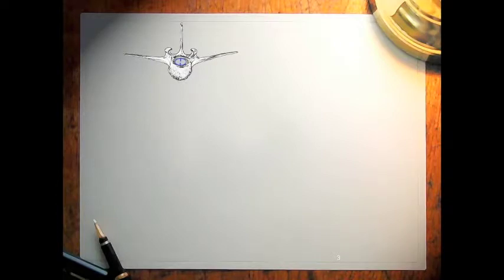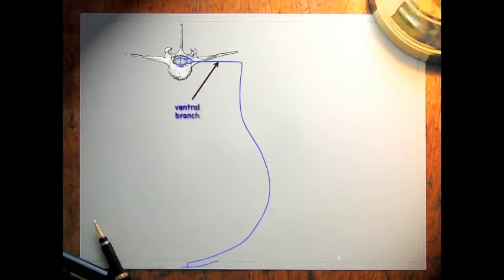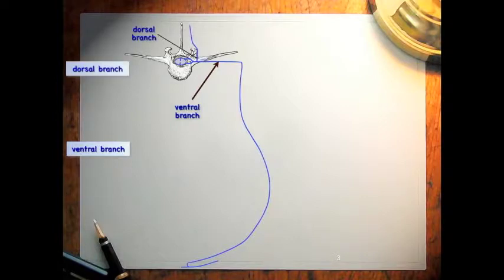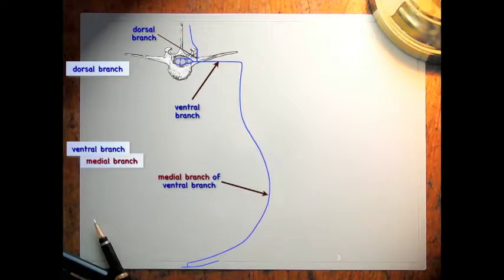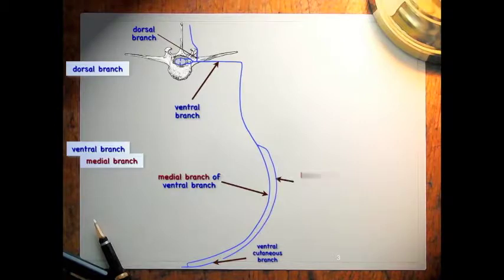Here we have a section of vertebra for the spinal cord. We're going to find that each spinal nerve has a ventral branch and a dorsal branch. The ventral branch will have a medial branch, and that medial branch will terminate on the ventral midline as a ventral cutaneous branch. So if we have a medial branch, we know we must have a lateral branch.